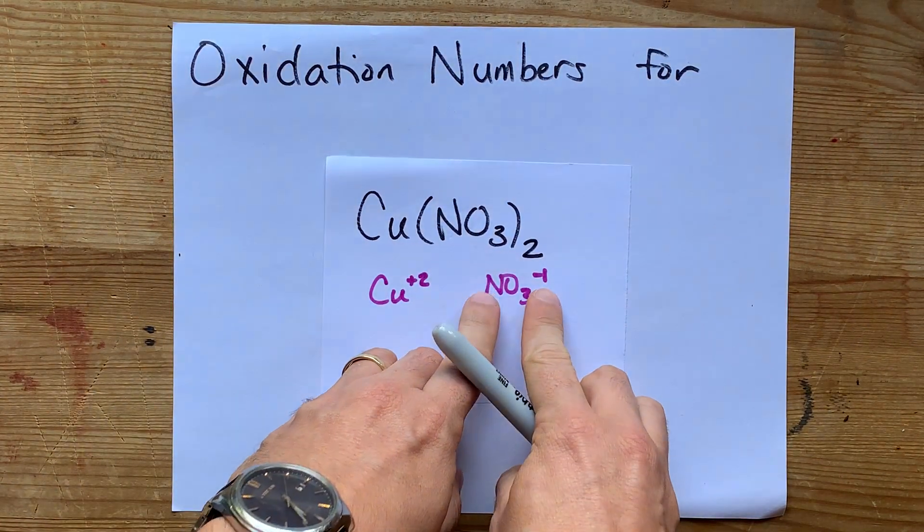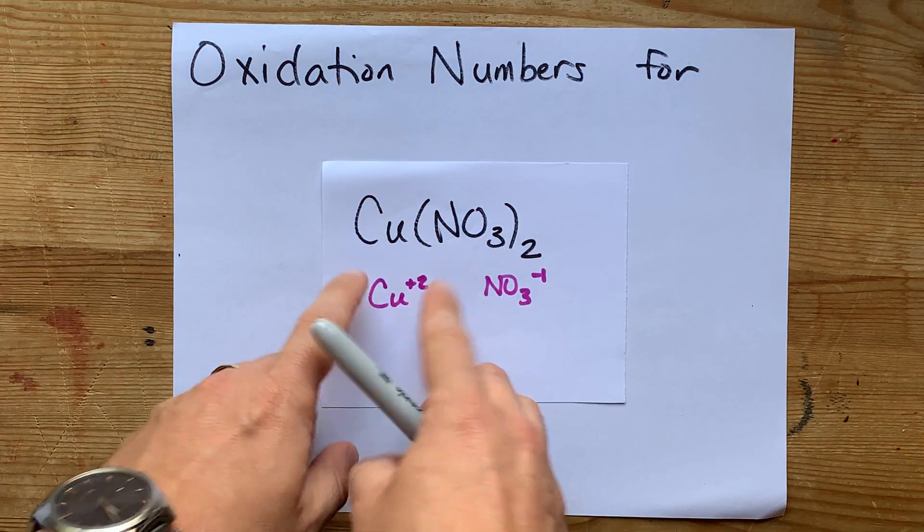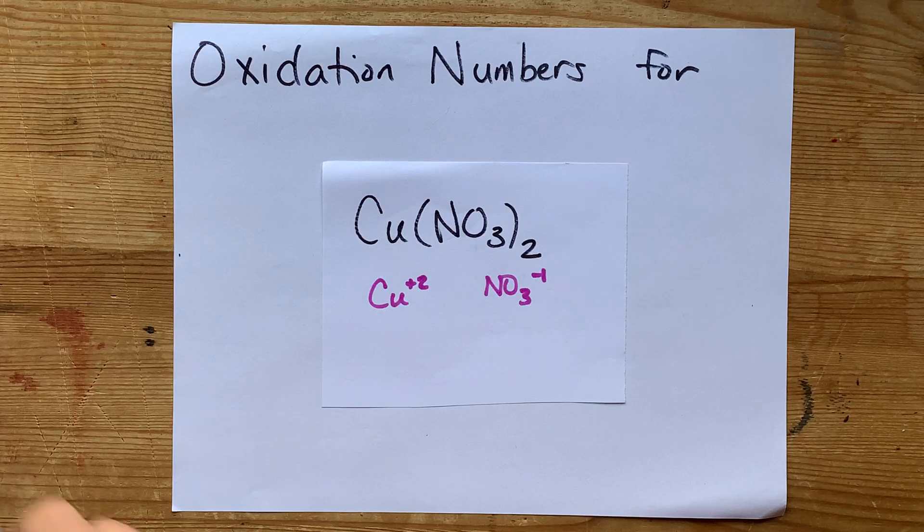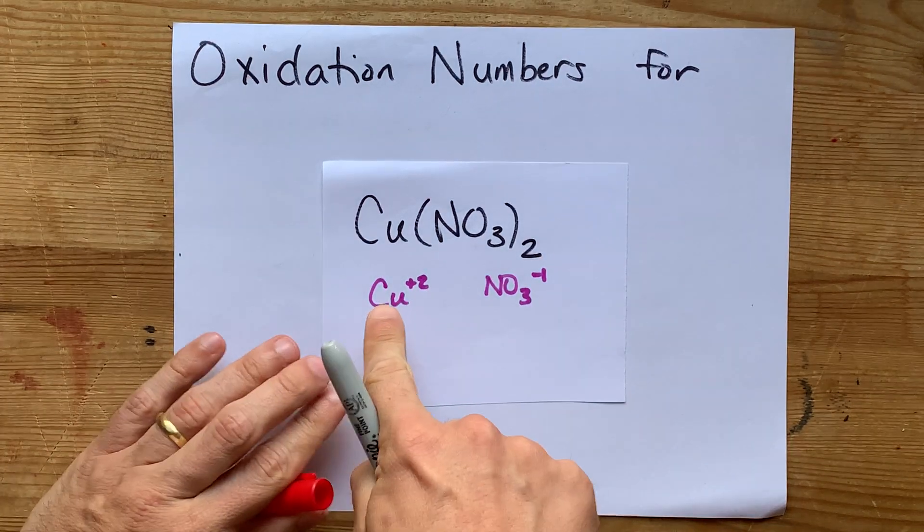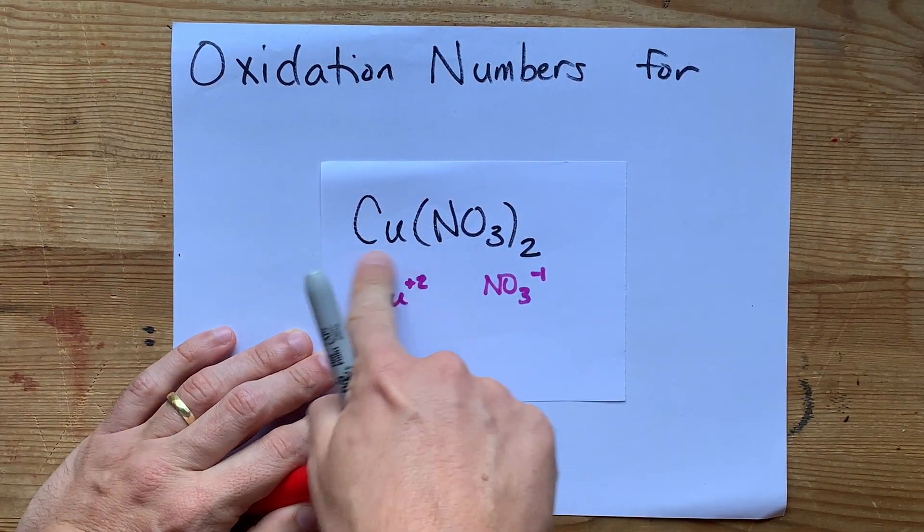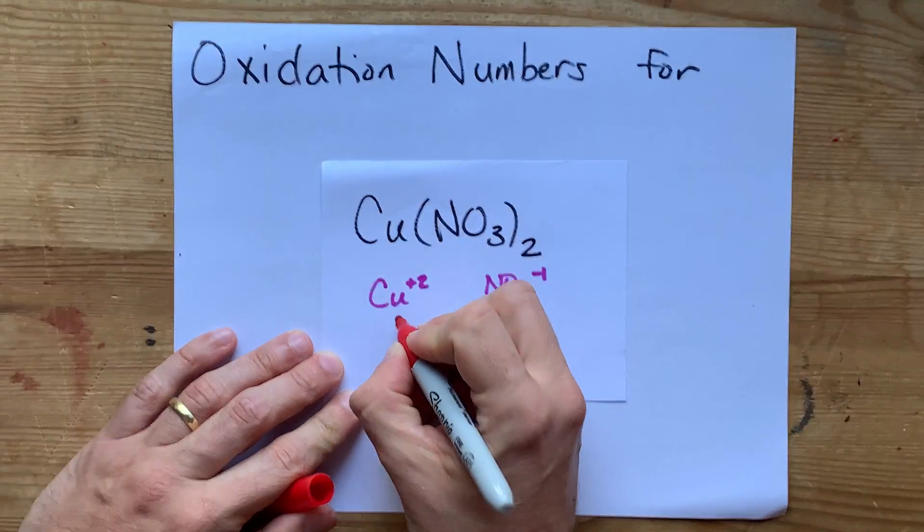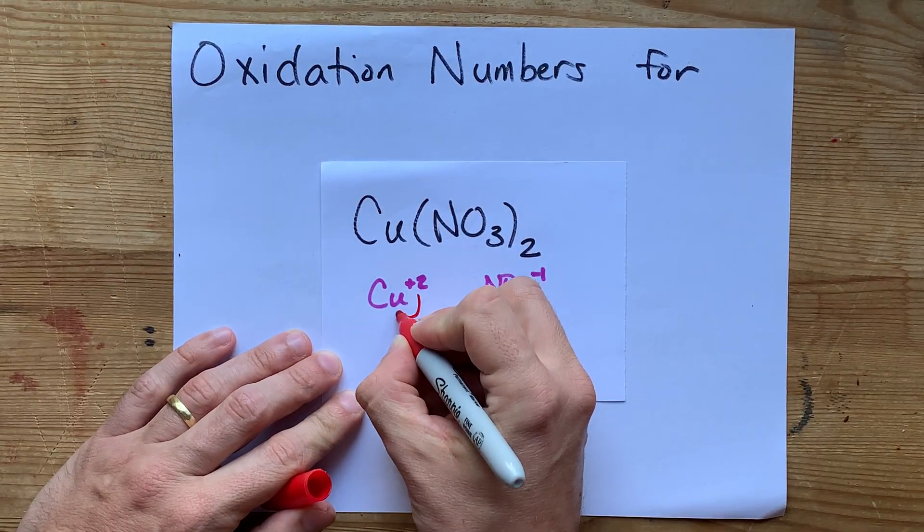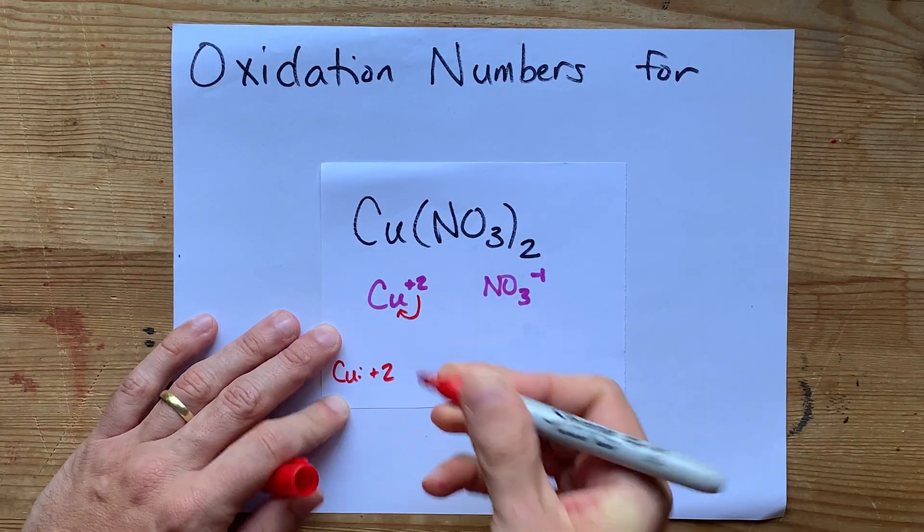Now, there's two of these, and then there's one of these, and that's what helps the charges cancel. Now, this is important because a single atom with a charge, or rather a monoatomic ion, if you want to call it that, has an oxidation number of whatever its charge is. So copper's oxidation number here is plus 2.